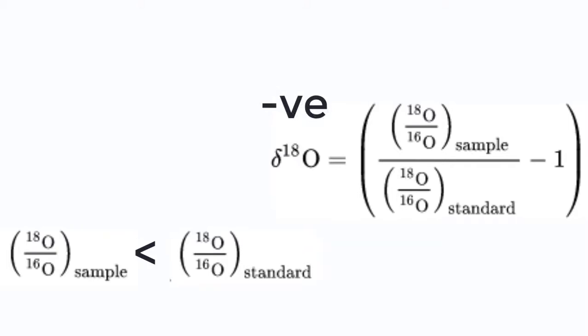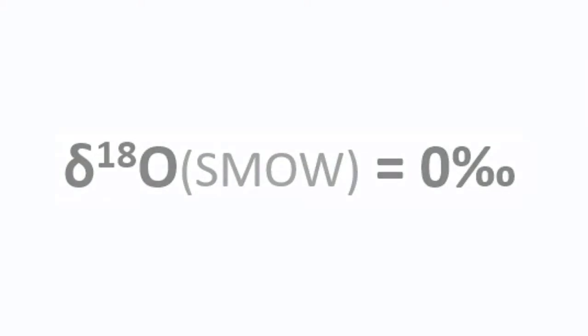In case of Oxygen isotope, the standard value is standard mean ocean water, which is assigned a value of 0 parts per mil.